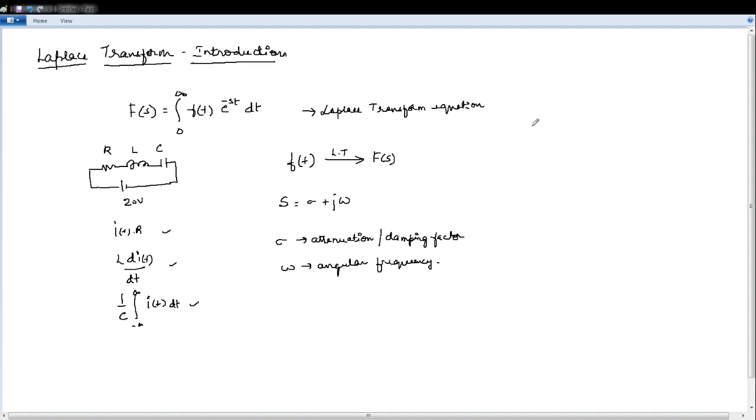So this S plane as it is mentioned earlier S plane will have its real part that is sigma and imaginary part j omega negative imaginary part j omega and minus sigma. So this is this entire plane is your S plane.